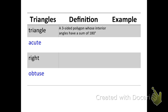The first one is a triangle. A triangle is a three-sided polygon whose interior angles have a sum of 180 degrees. For the example picture, just draw a triangle. Make it big enough so that you can write inside of it tomorrow in class.